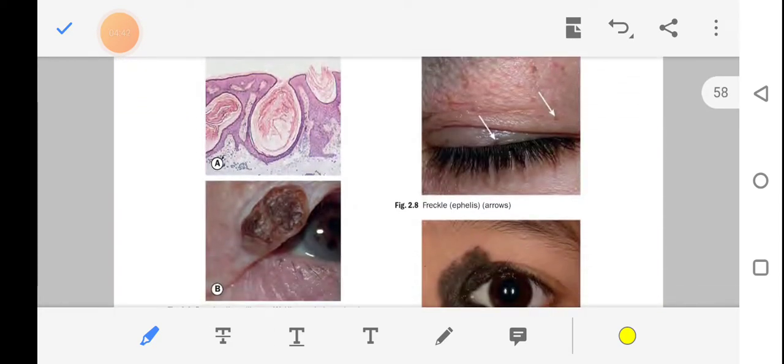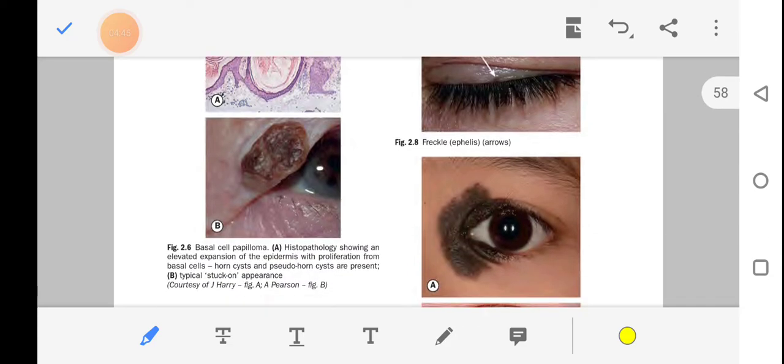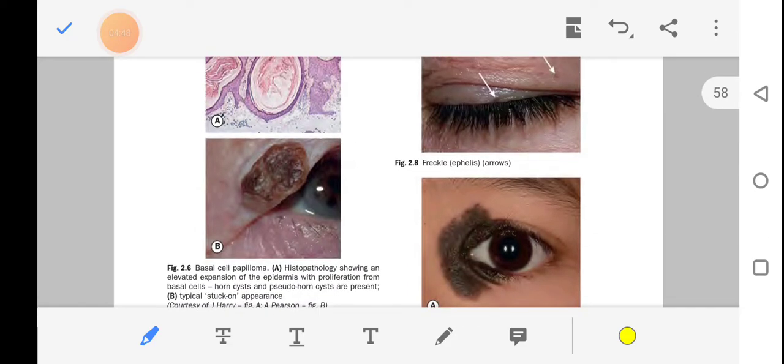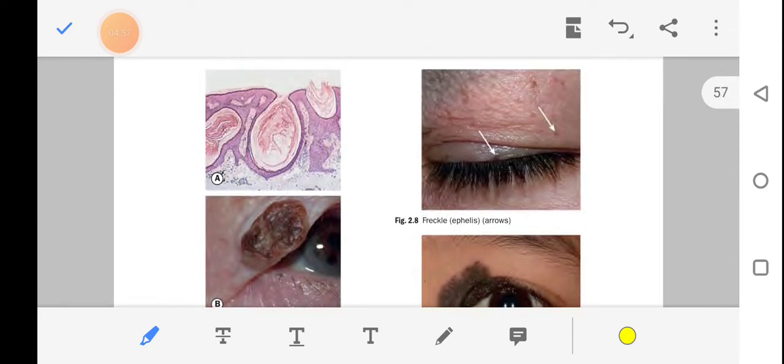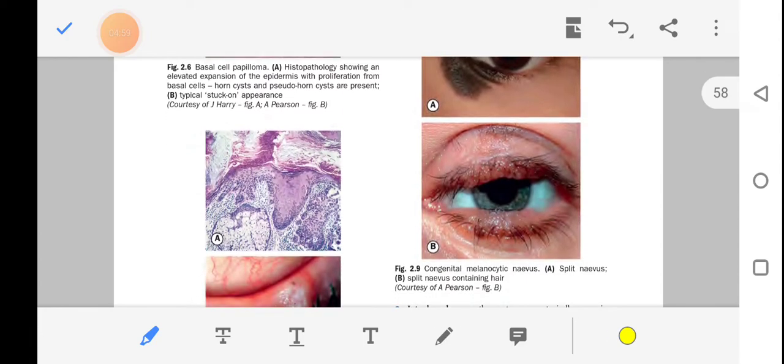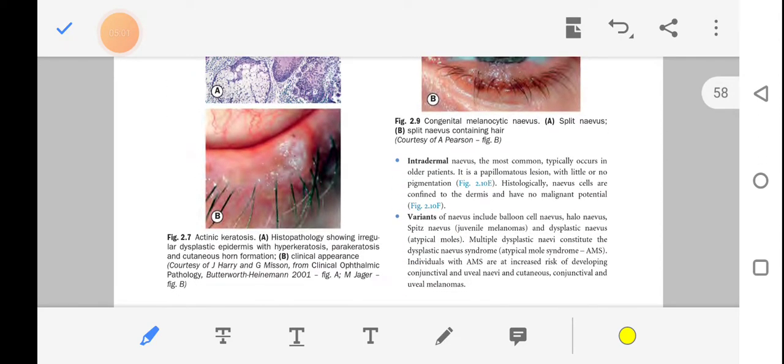Now let's look at the photos. This is basal cell papilloma. This shows expansion of epidermis with proliferation from basal cells, with the proliferation from the basal cells, and this is the stuck-on appearance.